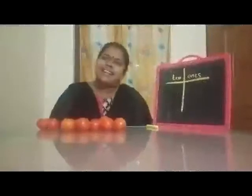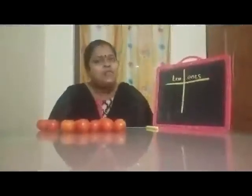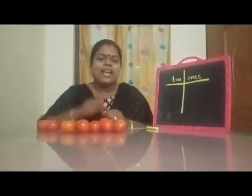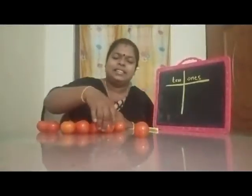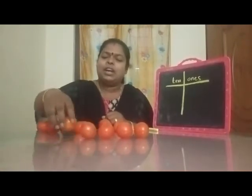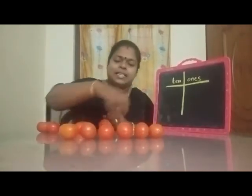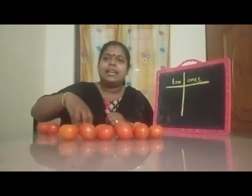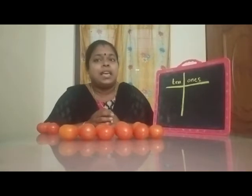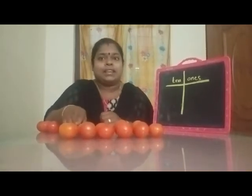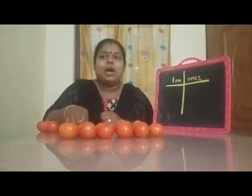Let's make a group of 10 and write the numbers. Now we have 12 tomatoes. Let's count and make a group of 10: 1, 2, 3, 4, 5, 6, 7, 8, 9, 10.